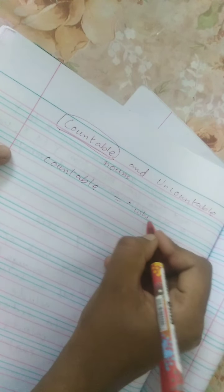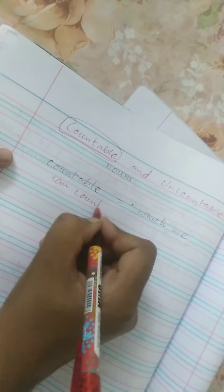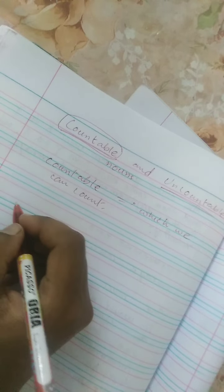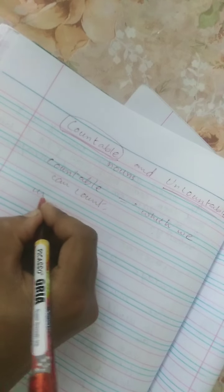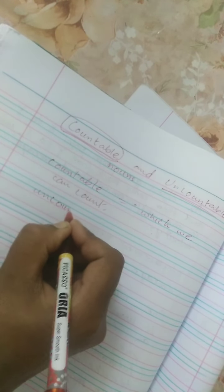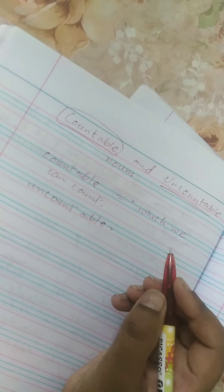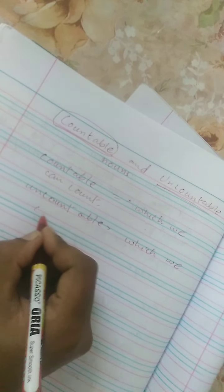Which we can count is called countable noun. From the word uncountable, it is very clear that the nouns which we cannot count are called uncountable nouns. This is the definition of countable and uncountable nouns.